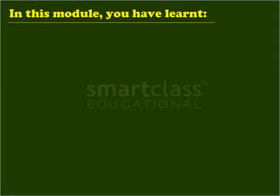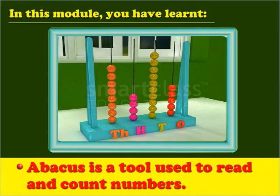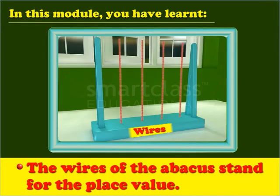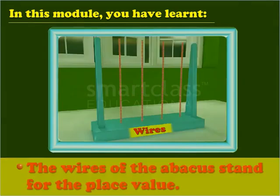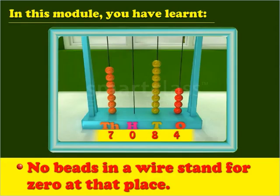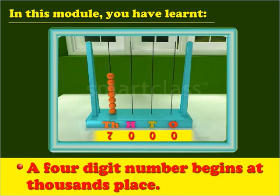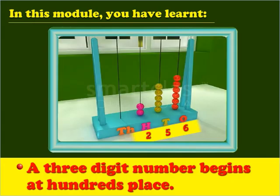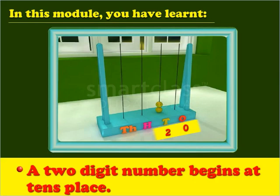In this module you have learnt: Abacus is a tool used to read and count numbers. The wires of the abacus stand for the place value. The total number of beads in each wire stands for the digit in that place value. No beads in a wire stand for zero at that place. A four digit number begins at thousands place. A three digit number begins at hundreds place. A two digit number begins at tens place.